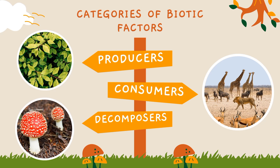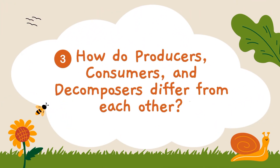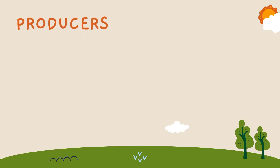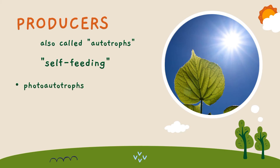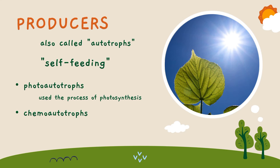Producers, or autotrophs, are self-feeding or self-sustaining organisms — meaning they can make their own food. Autotrophs can be photoautotrophs or chemoautotrophs. Photoautotrophs are organisms that use the sun's energy for photosynthesis, while chemoautotrophs are organisms that use inorganic chemical reactions in the process of chemosynthesis. Plants and lichens are the primary producers in terrestrial ecosystems, while algae provide crucial nutrients for other organisms in the aquatic ecosystem.